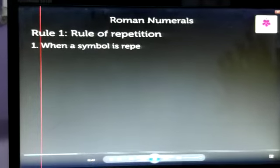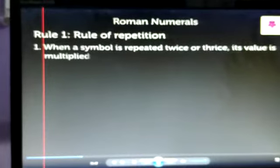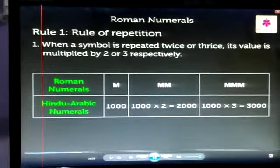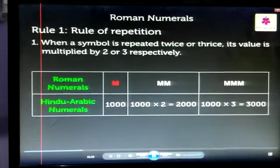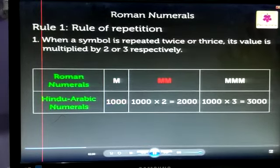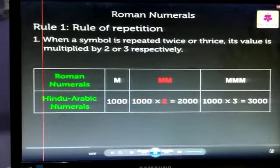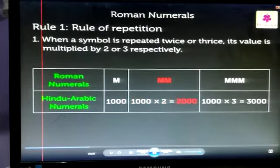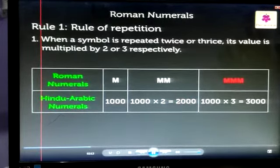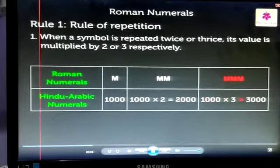When a symbol is repeated twice or thrice, its value is multiplied by 2 or 3 respectively. For example, M is equal to 1000. MM is equal to 1000 multiplied by 2, which equals 2000. MMM is equal to 1000 multiplied by 3, which equals 3000.